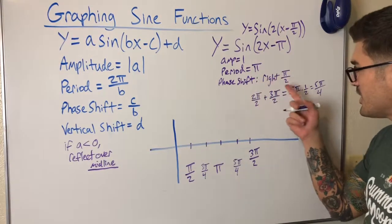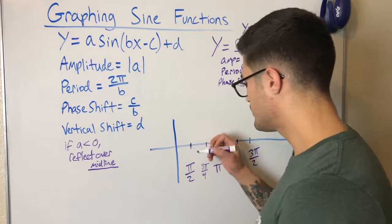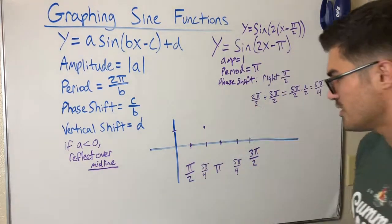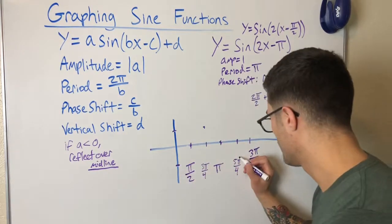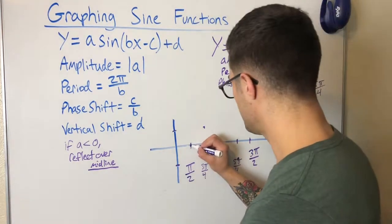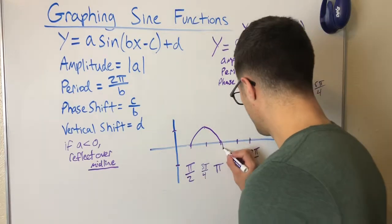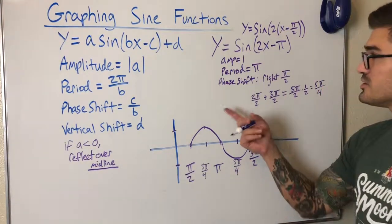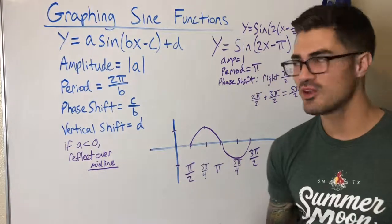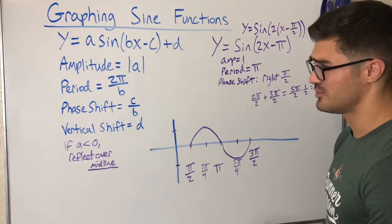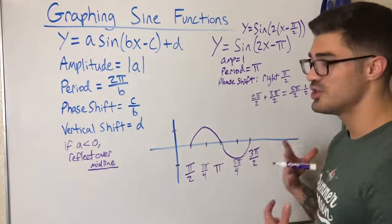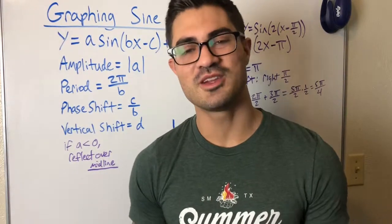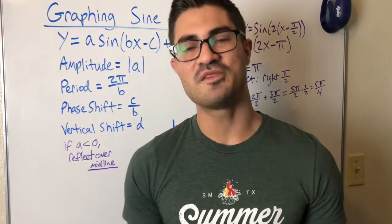With amplitude one and no vertical shift, y still ranges between negative one and one. The graph goes: start at (pi/2, 0), up to (3pi/4, 1), back to (pi, 0), down to (5pi/4, -1), and back up to (3pi/2, 0). This is one period of sine(2x minus pi); the graph continues in both directions. I may make another video with more examples including reflections. Hope this helped — hit like, subscribe, leave comments, and I'll see you in the next video!